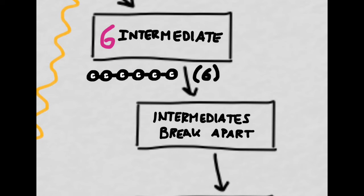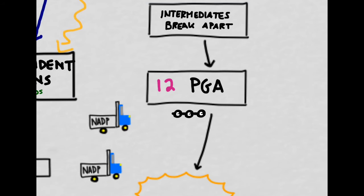Because these six-carbon intermediates are so unstable, they almost immediately break apart. When the intermediates break apart, they rearrange themselves into shorter molecules, which are called PGA.